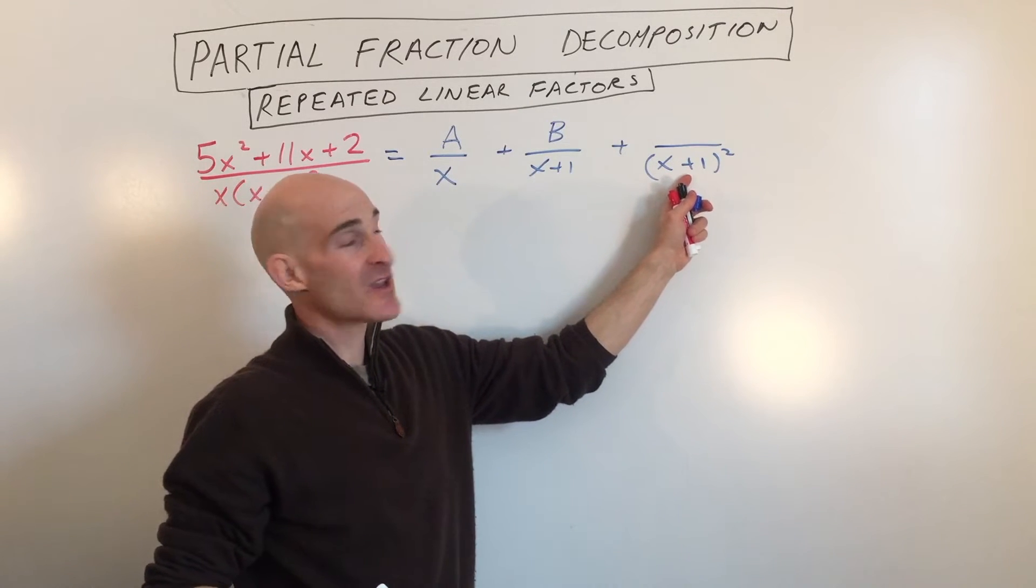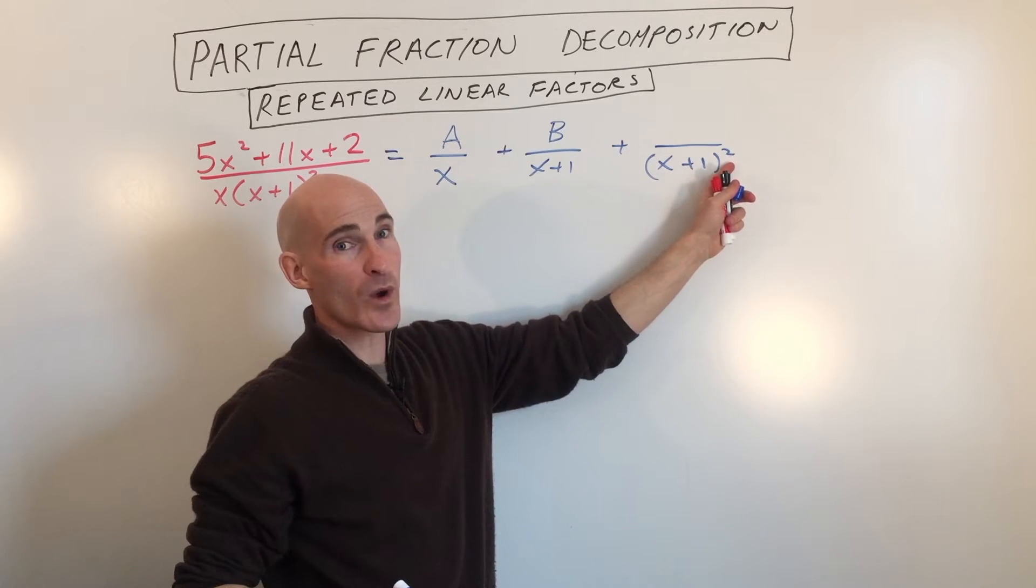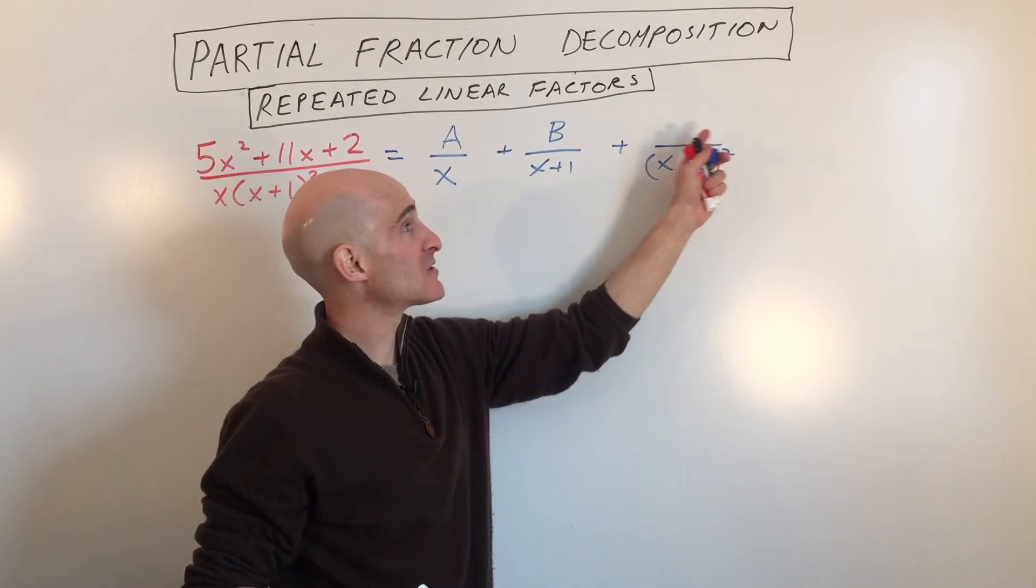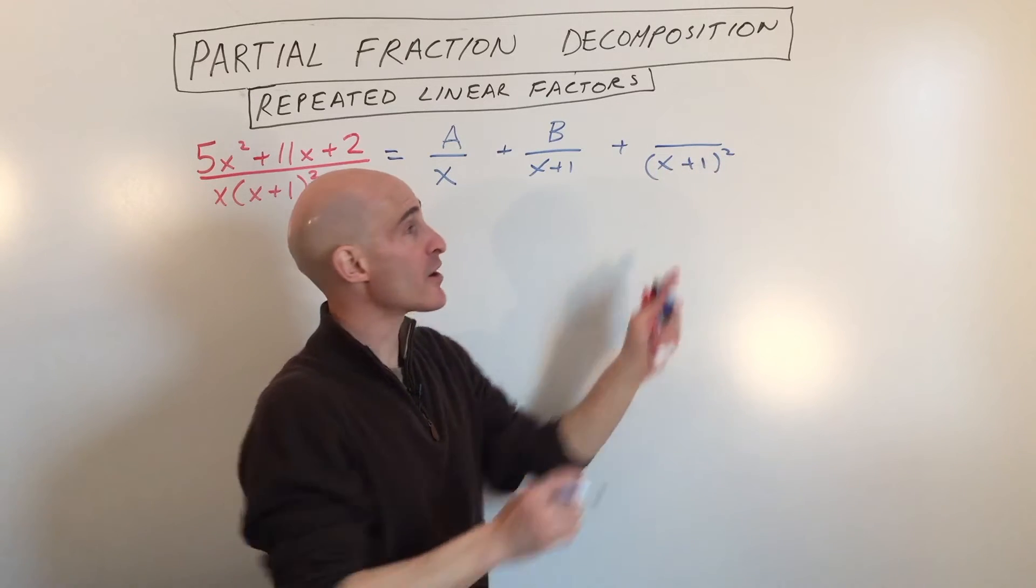Now, here's where students sometimes make a mistake. They see that this is x squared, and they think this will be like cx plus d. Okay, because they want it to be one degree lower than what they think is the x squared.